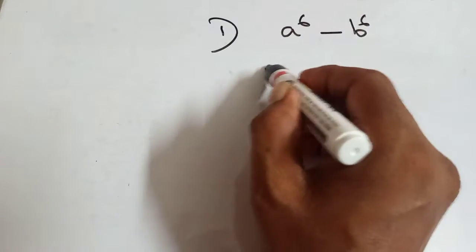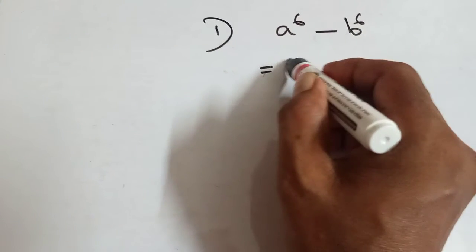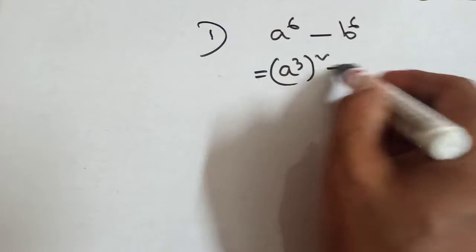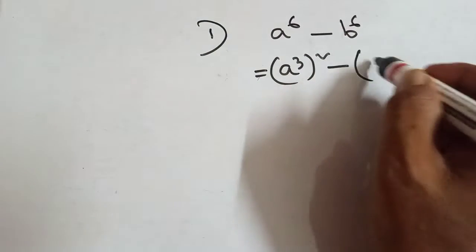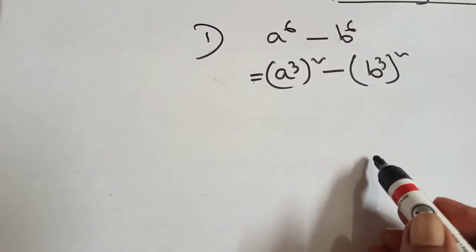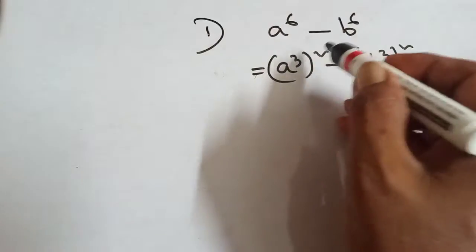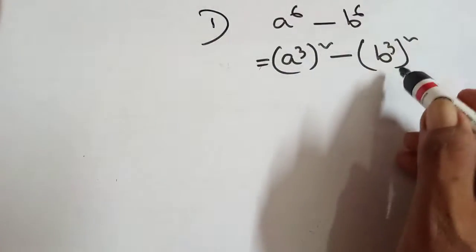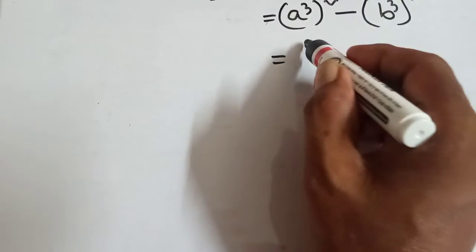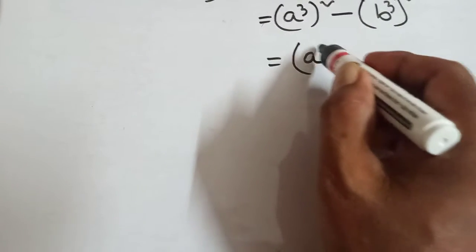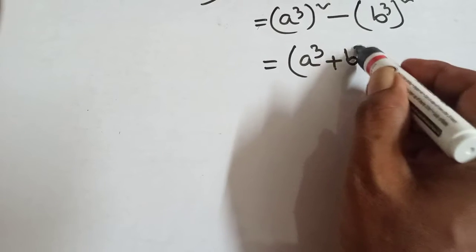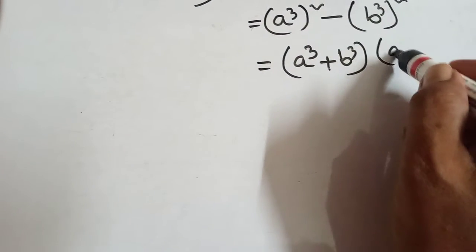First, break it as A to the power 3 whole square minus B to the power 3 whole square. That means 3 to 6. Now apply A square minus B square formula — that is A plus B into A minus B.